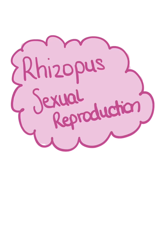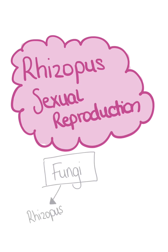There are thousands of different species of fungi. Rhizopus is one of them that's on your A-Level Biology course. Rhizopus can reproduce sexually or asexually, but this video will deal with sexual reproduction in Rhizopus.